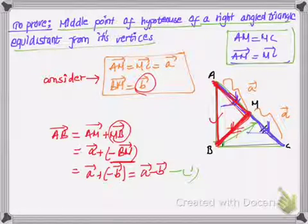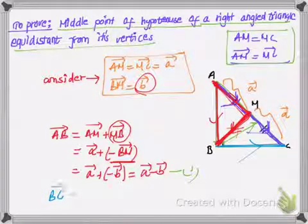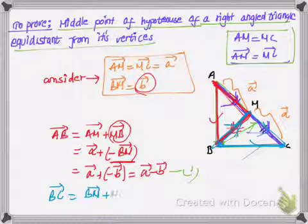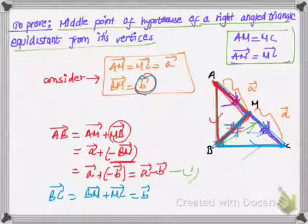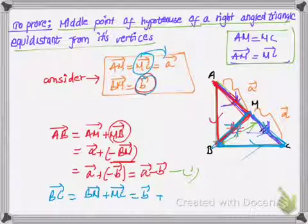And for the second equation, I'll take this vector BC. So vector BC means moving from point B to C is the same as moving from point B to M and then M to C. So I can write BM plus MC. BM vector is equal to vector B and MC vector, we've already seen, is equal to vector A.